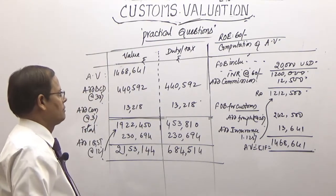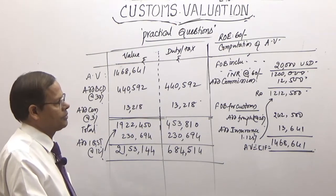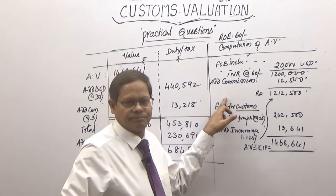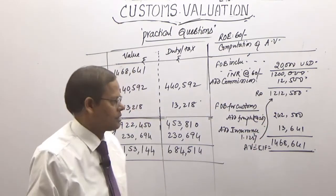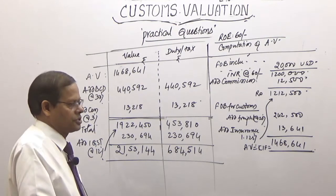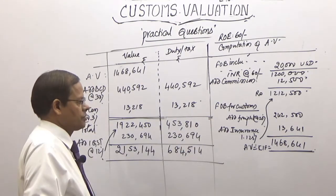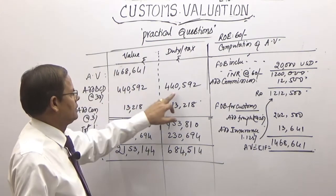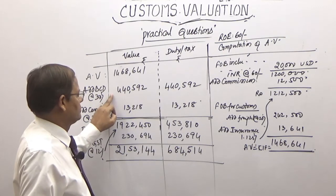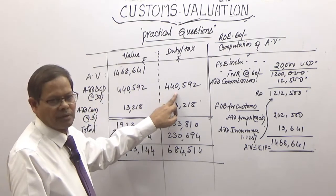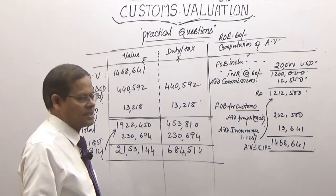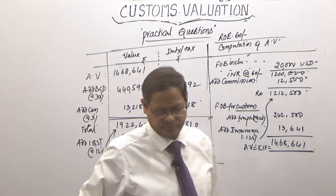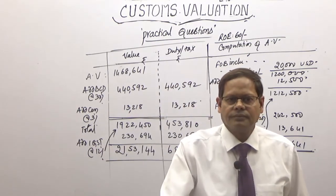To summarize what we did: we added commission to FOB to get customs FOB, then added freight restricted to 20% because it is by air, and insurance at 1.125%. On the assessable value, we added basic customs duty plus cess at 3%, and then IGST at 12% on the total.